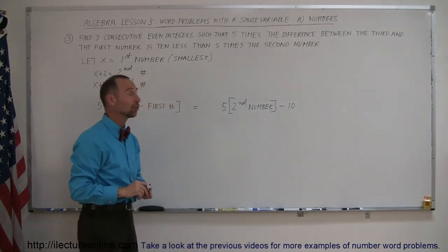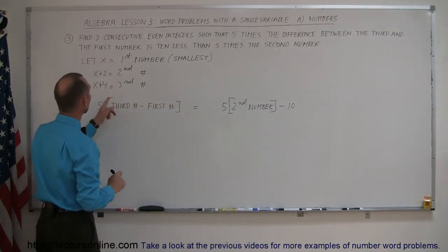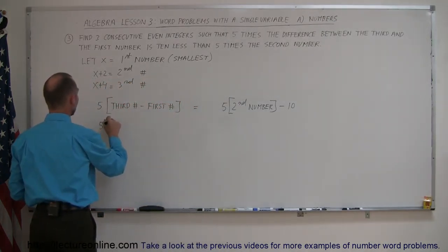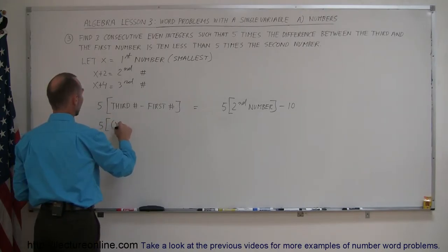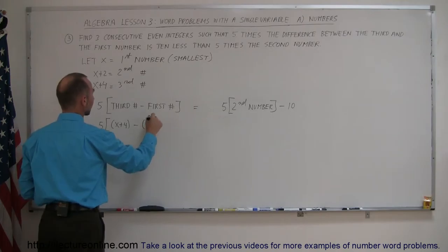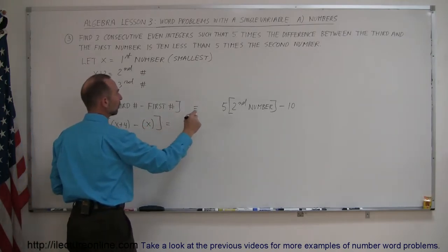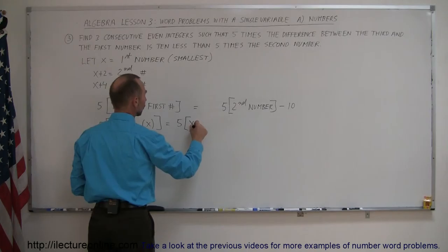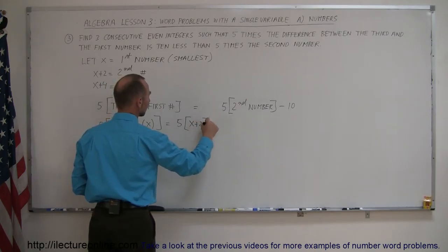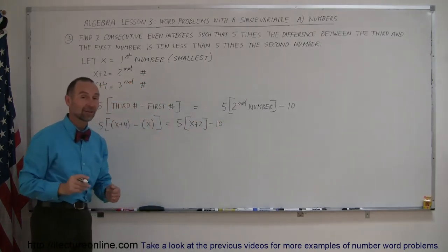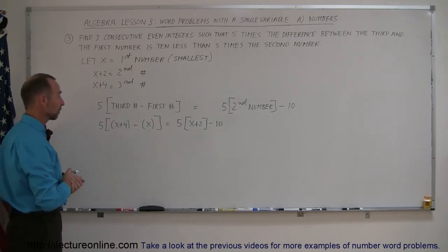Now we can go ahead and write what each one of those are equal to. The third number is x plus 4, so we have five times (x plus 4 minus the first number, which is x). And that is equal to five times the second number, which is x plus 2, minus ten. Now we can go ahead and solve that equation for x.